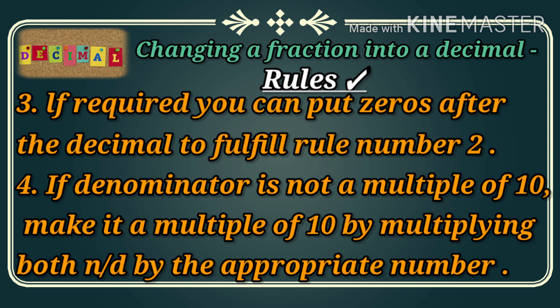The last step: if the denominator is not a multiple of 10, make it a multiple of 10 by multiplying both the numerator and denominator by the appropriate number.